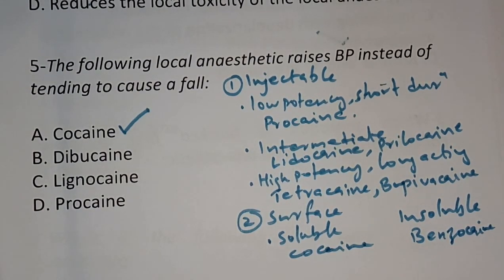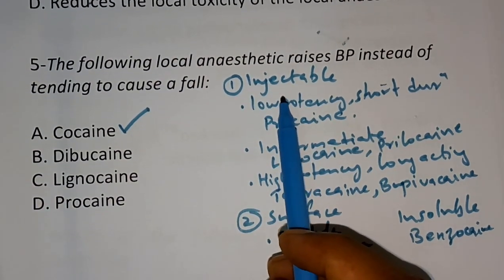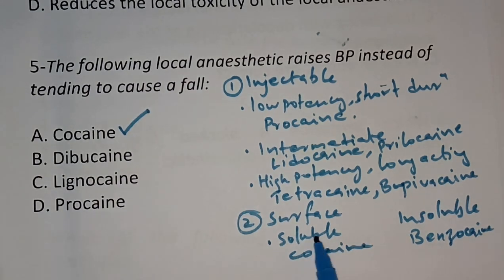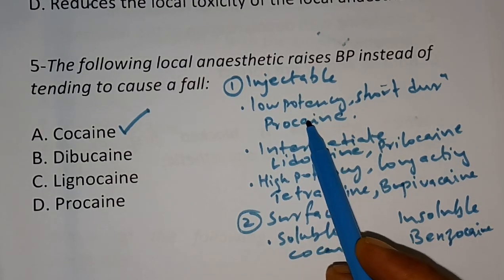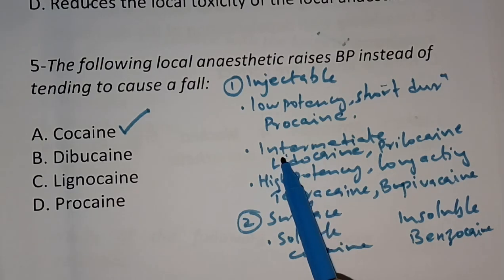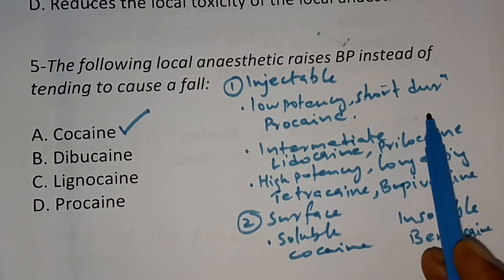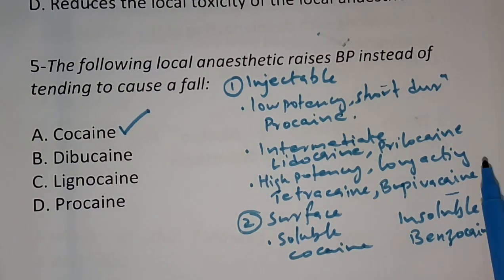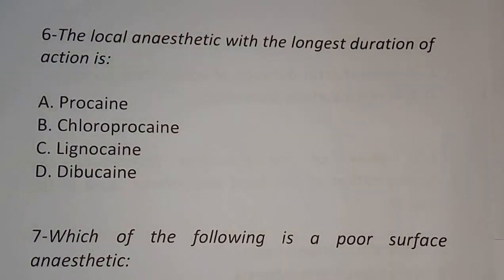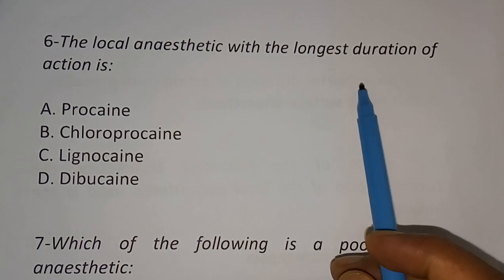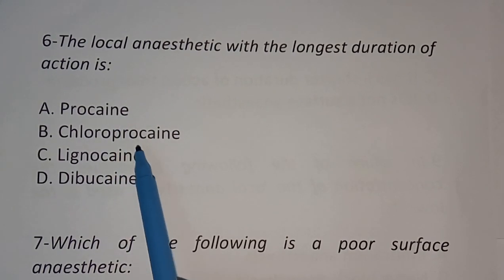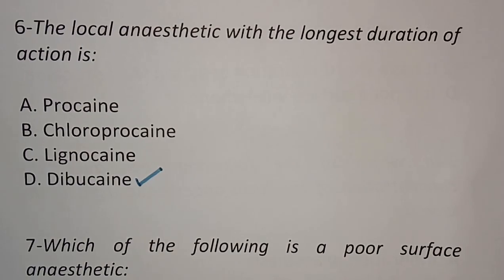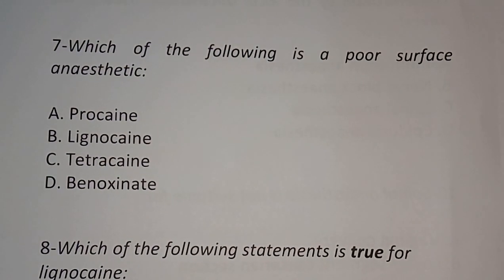Question 6: Which local anesthetic has the longest duration of action? Options: procaine, chloroprocaine, lignocaine, bupivacaine. The correct answer is bupivacaine — it is the longest-acting local anesthetic. Question 7: Which of the following is a poor surface anesthetic? Options: procaine, lignocaine, tetracaine, benoxinate. The correct answer is procaine — procaine is a poor surface anesthetic.